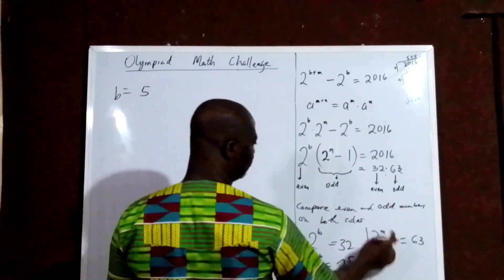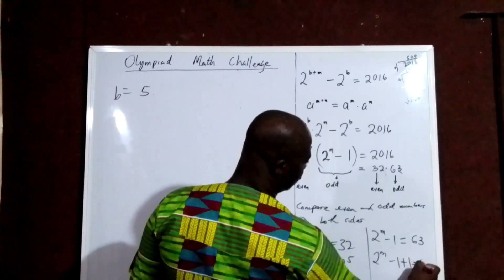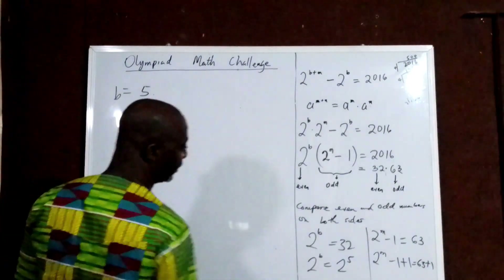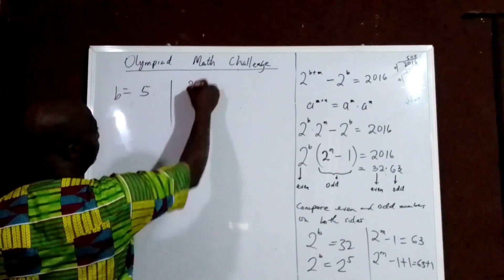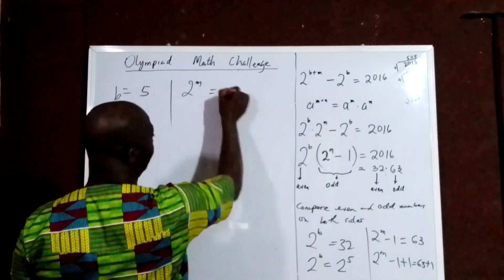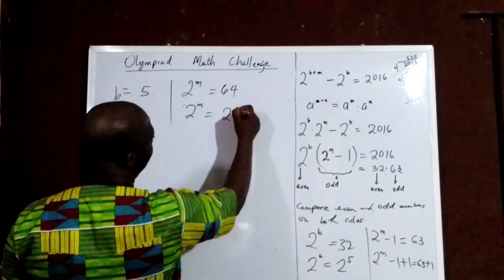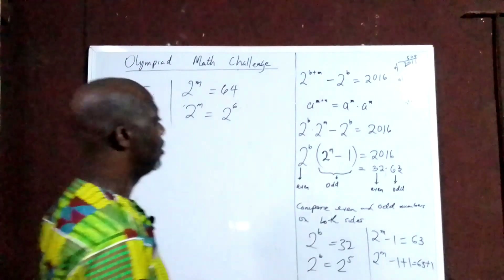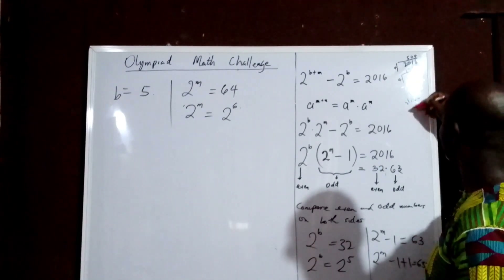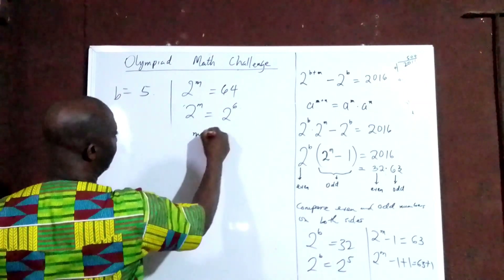Now let's solve for M. We have 2 to the power of M minus 1 equals 63. Adding 1 to both sides: 2 to the power of M equals 64. And 64 is 2 to the power of 6 — you can see that 32 times 2 gives us 64. So from there, M equals 6.